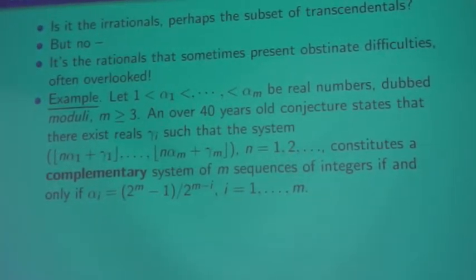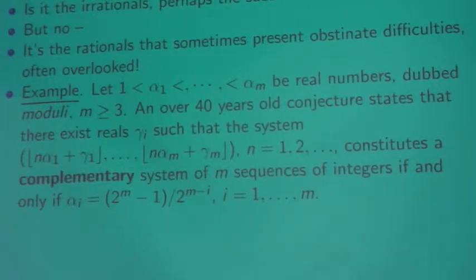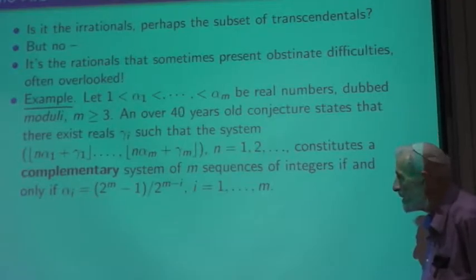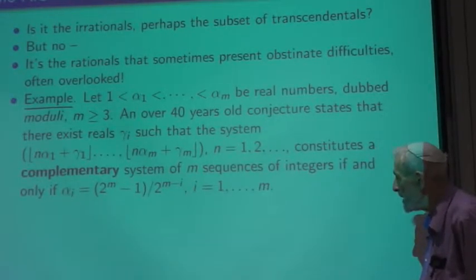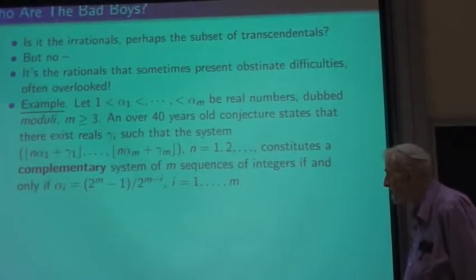And here's an example of what happens with the rationals. So, suppose you have a sequence here. The king of the sequences sits here, Neil. But this is a finite sequence, alpha_1, alpha_m. They're distinct real numbers. And we call them moduli for the purposes of this talk. And there is a 45 years old conjecture that states that there exists real numbers, gamma_i, such that this system, the integer part, which Doron doesn't like so much, n*alpha_1 plus gamma_1 and so on, up to n*alpha_m plus gamma_m, where n goes over the positive integers.